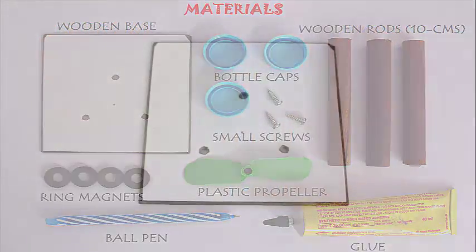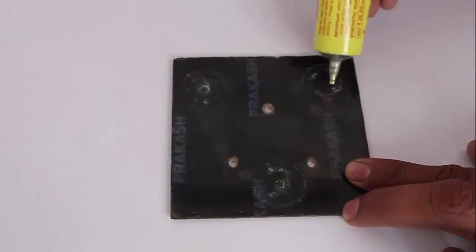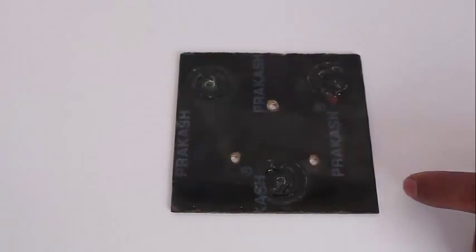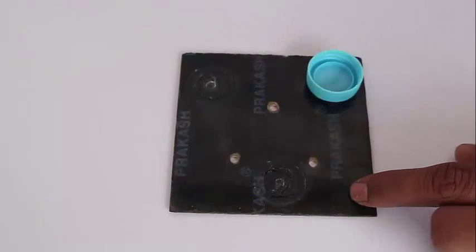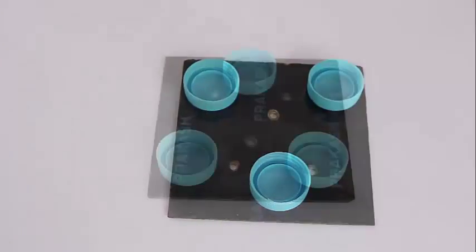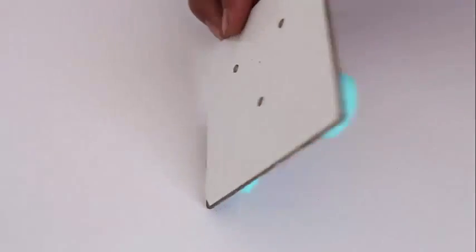First, drill three holes in the shape of an equilateral triangle in a stiff wooden base. Make a dent in the center. Then stick three bottle caps with rubber glue on the back for support. This will become a kind of stand.